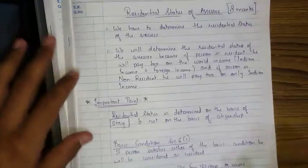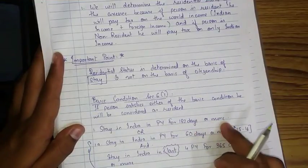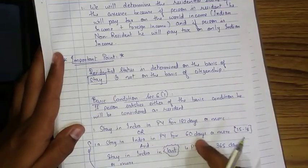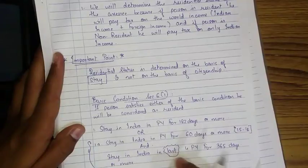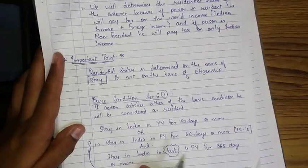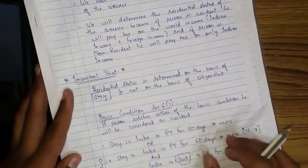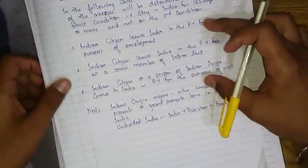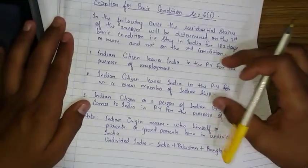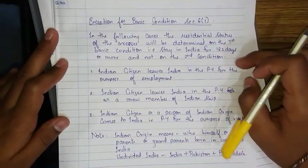If an assessee is resident — under Section 6, subsection 1 — meaning he satisfies the condition of staying in India for 182 days or more, or staying in India for 60 days or more and also staying in India in the last four previous years for 365 days or more — if he satisfies either of these conditions, he'll be called a resident. But for those three exceptional persons, only the first basic condition is applicable, not the second.